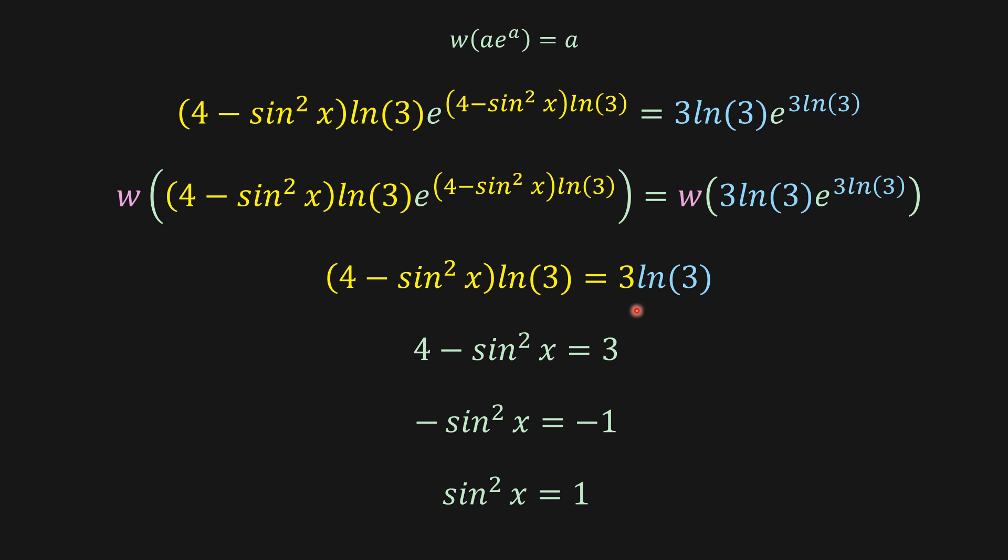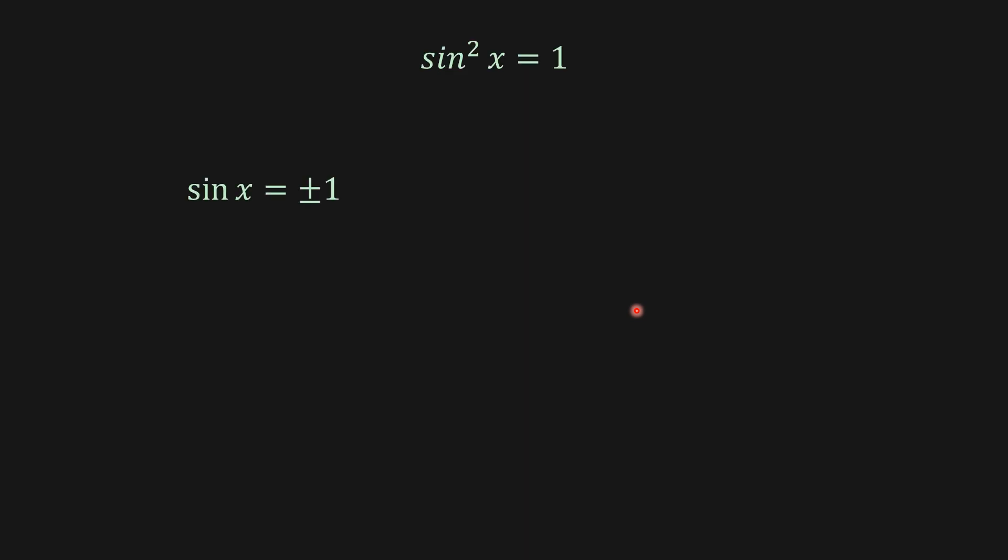And then from here, we have that sin x is equal to plus or minus 1. And then from here, sin x equals 1 or negative 1. And then from here, we have two values of x, two possibilities, which are this one.